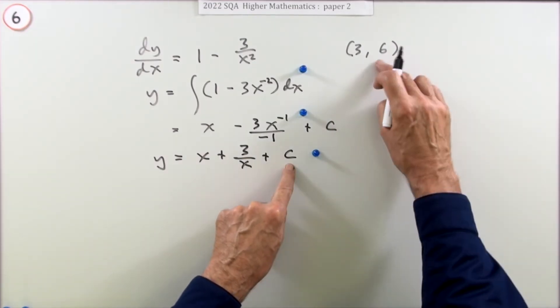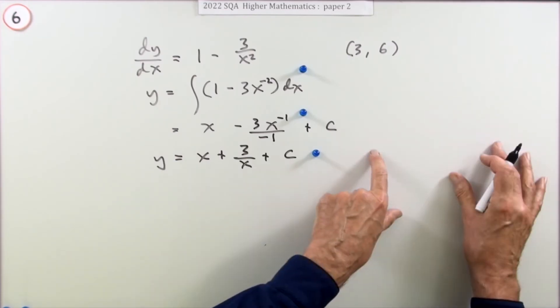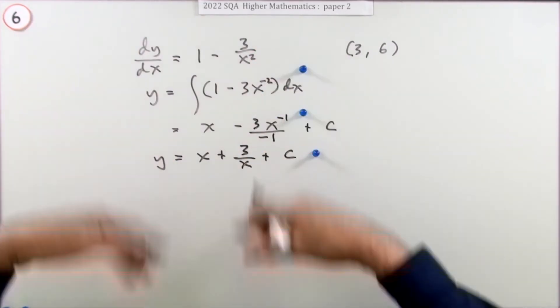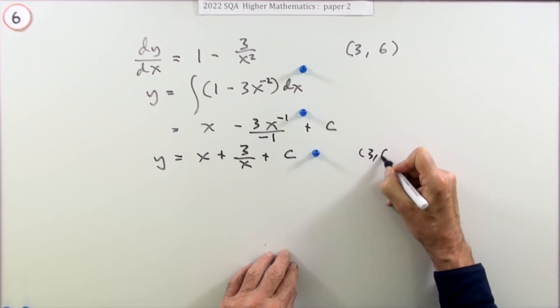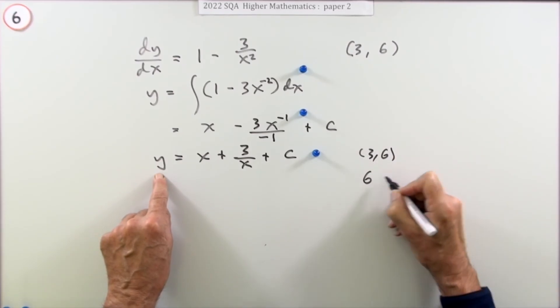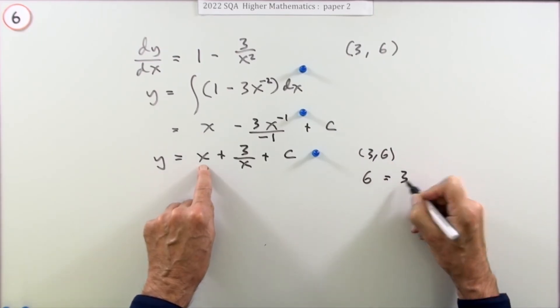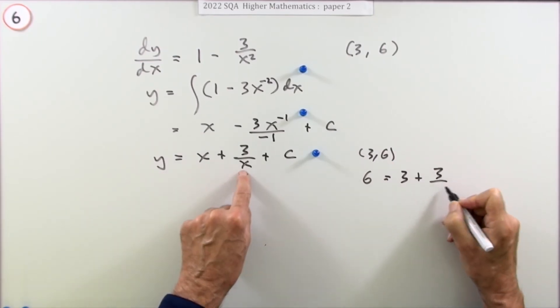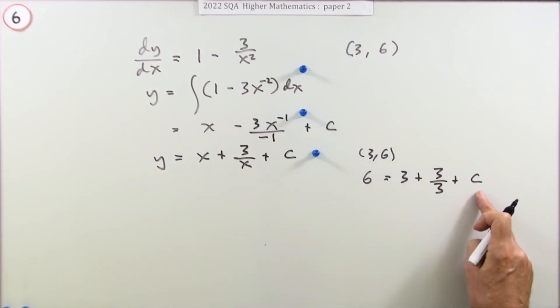Now, how are you going to find that c? Well, here's a point here. I think I'll do it at the side so it doesn't spoil the flow of this. So, using the point (3, 6), that says when y is 6, x is 3, x is 3, c I don't know. But it's the only unknown now, so I soon will know it.